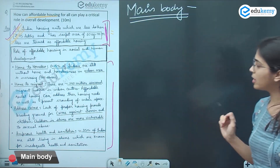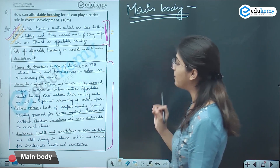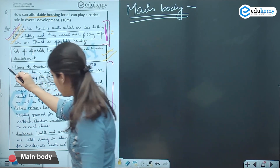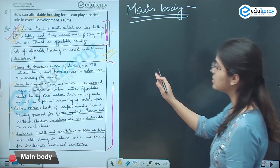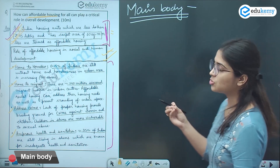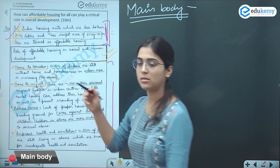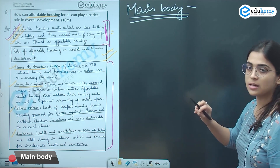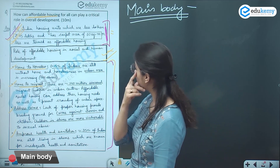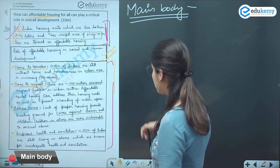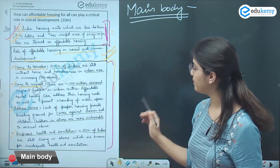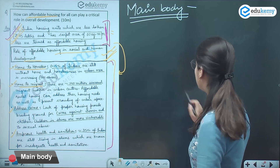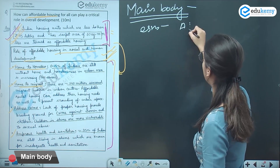Now we are going to discuss the main body of the answer. Always try to give major headings and sub-headings in your answer, because it makes your answer look more structured, neat, and clean. When you underline keywords, their visibility increases. Here I have given the major heading: 'Role of Affordable Housing in Social and Human Development.' We are establishing a relationship between affordable housing and human development, discussing each point one by one.